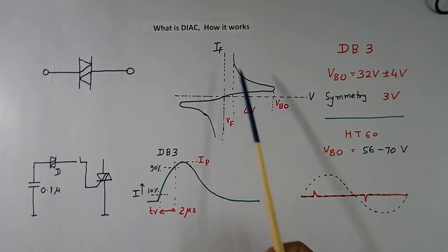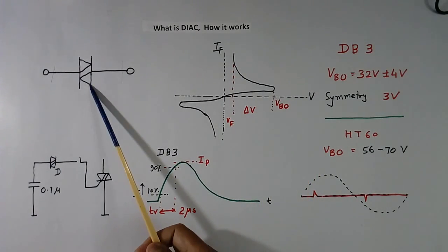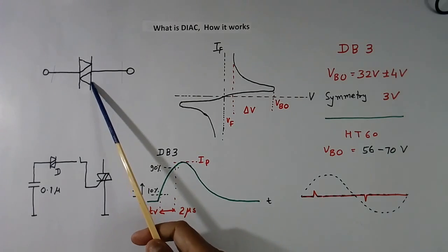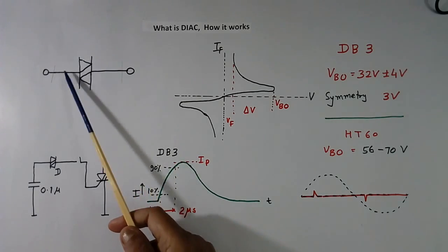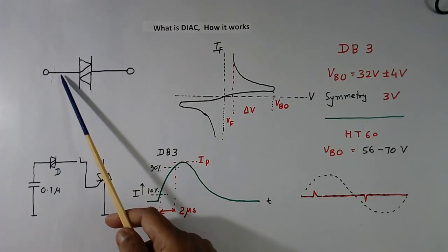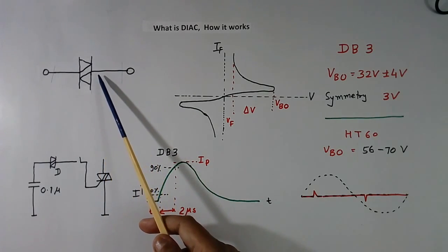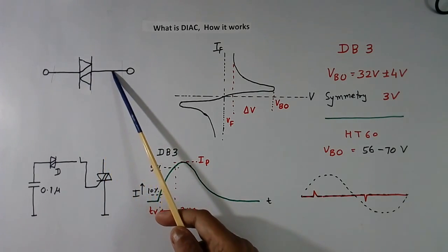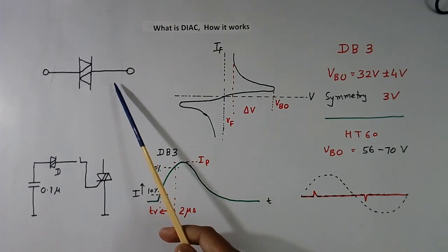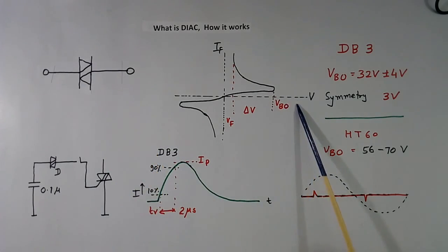This is VI characteristics of DIAG. When we apply a voltage across this, a small leakage current flows of the order of few micro ampere. Every DIAG has one break over voltage called VBO.